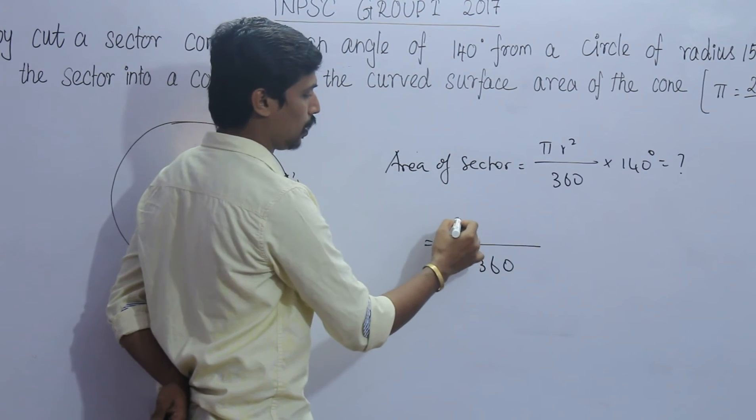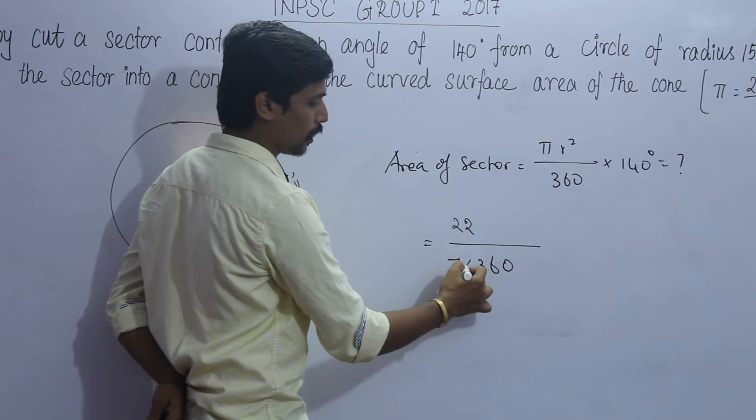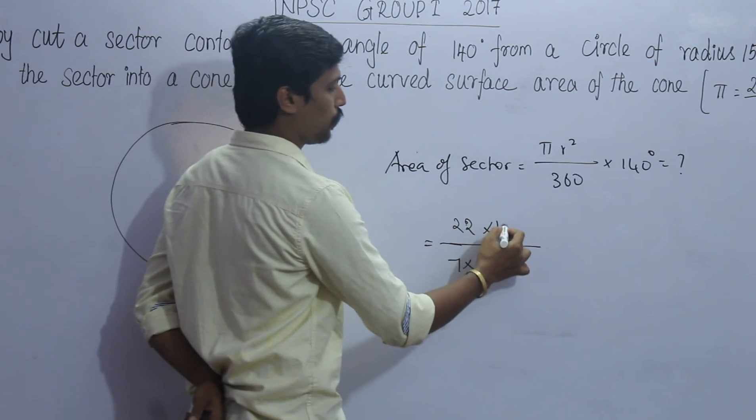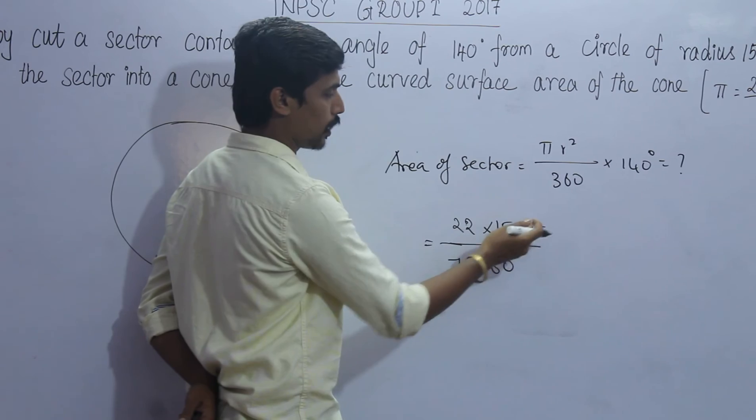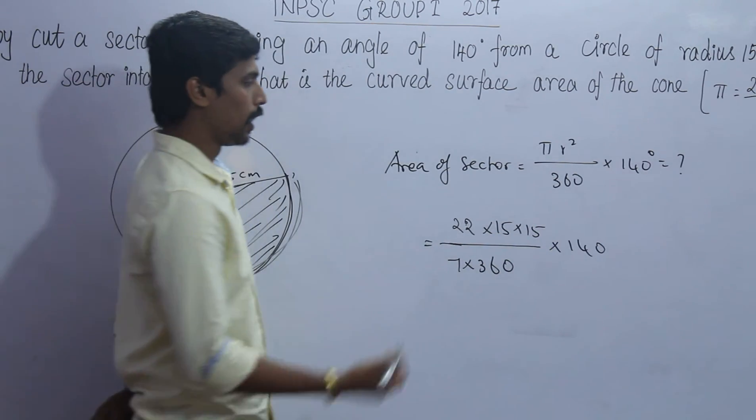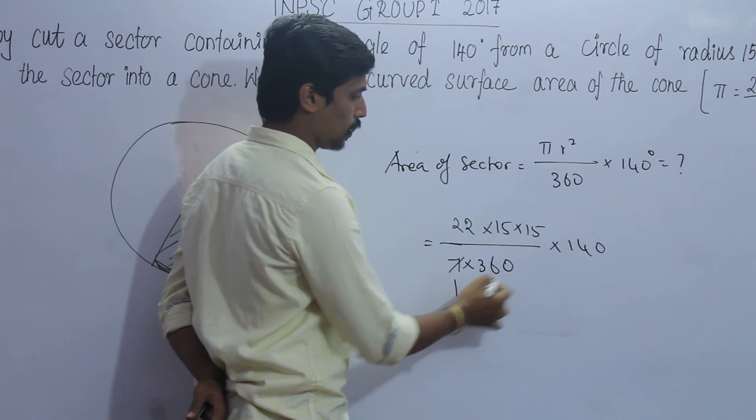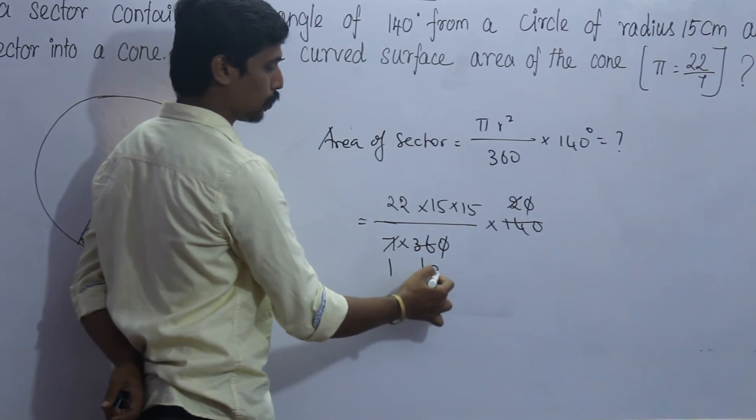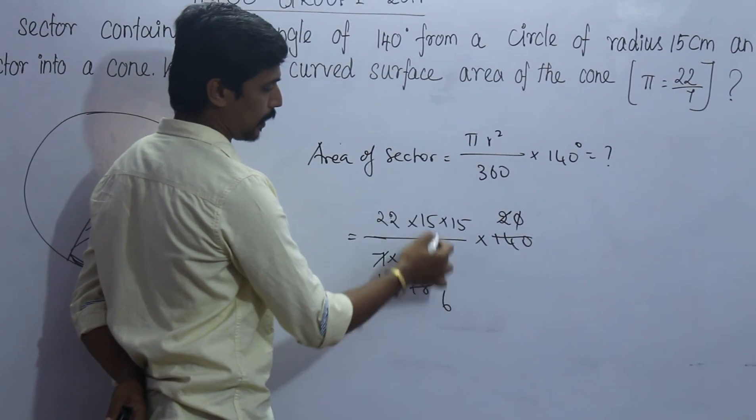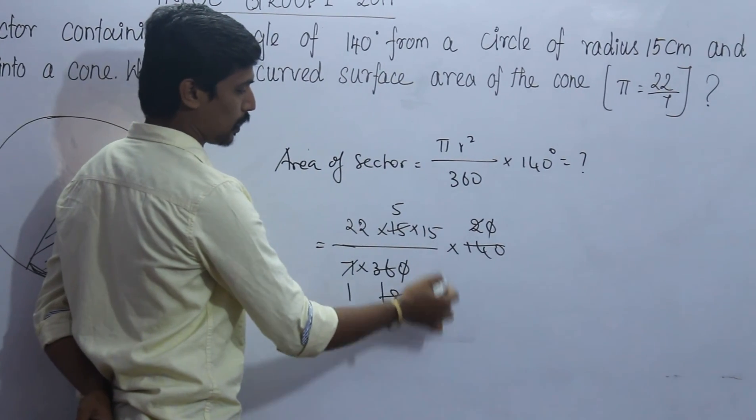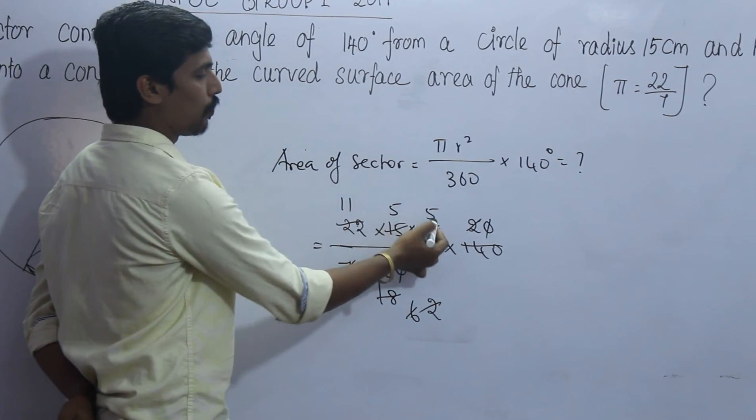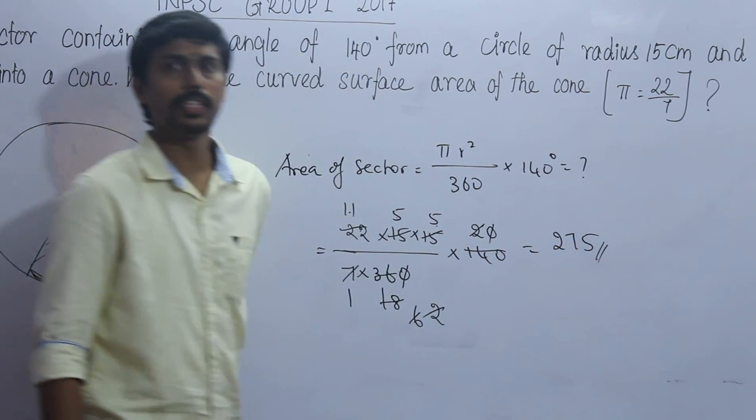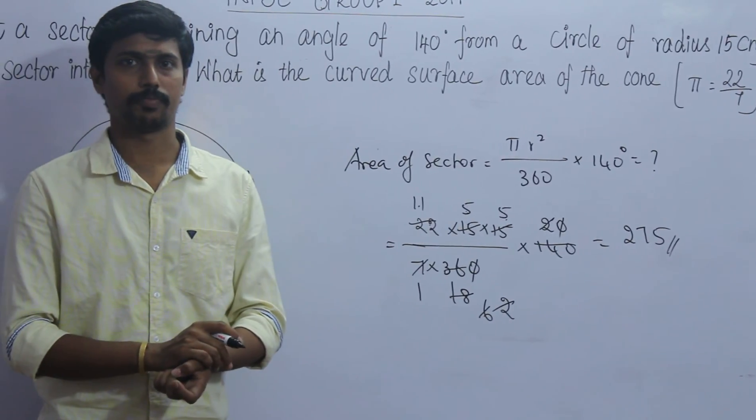So the formula is: 360 degrees in denominator, pi r squared, that's 22 by 7, radius is 15 centimeters, so 15 into 15, pi r squared by 360 into 140. If we solve it: 7 into 140 is 20, cancel zeros, 2 into 36 is 18, 3 into 18 is 6, 3 into 15 is 5, multiply through: 5 into 5 is 25, 25 into 11 is 275. The answer is 275 centimeter square. Thank you.